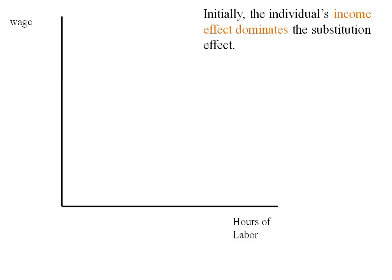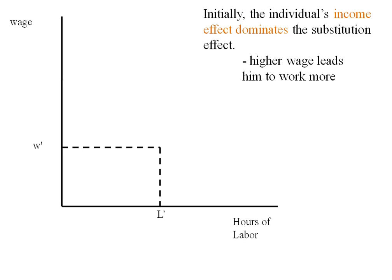Here we're going to plot on a different axis — hours of labor, so my working hours, versus the wage. Typically what we see for an individual is first the substitution effect dominates the income effect, meaning a higher wage leads this individual to work more. So at a low wage, we work a particular number of hours, and as you raise the wage, this individual will choose to work more hours.